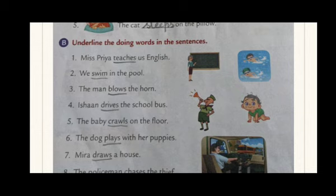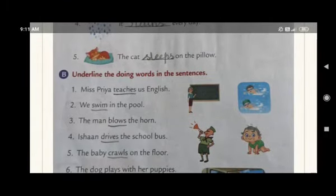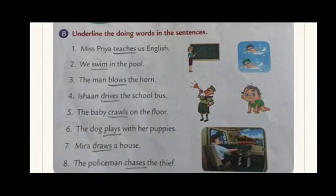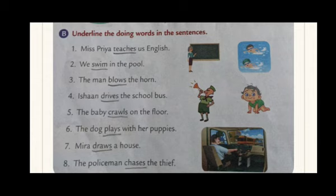Number four: Eishan drives the school bus. Eishan is singular, so you use drives. Underline the word drives. Number five: the baby crawls on the floor — crawls is the action word. Number six: the dog plays with her puppies. Plays — underline it. Number seven: Meera draws a house. Draws is the action word. Number eight: the policeman chases the thief. Underline the word chases.